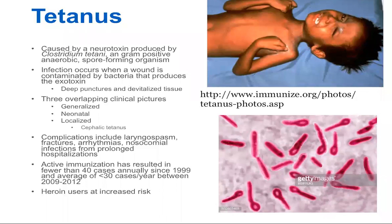The neurotoxin is called tetanospasmin, and per weight, it is one of the most toxic neurotoxins known to man. You only need 2.5 nanograms per kilogram of body weight for a lethal dose of this neurotoxin — so very, very potent.